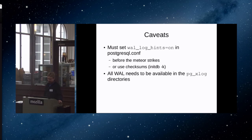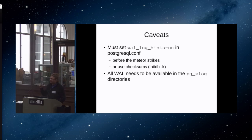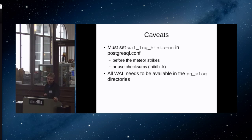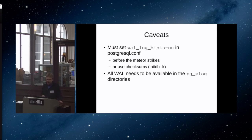Some caveats: for pg_rewind to work, you have to set an option in the config file called wal_log_hints. In Postgres there are hint bits on every table row — little flags indicating whether a transaction committed or aborted — so we don't have to consult the commit log every time we scan a table. Setting those hint bits is not normally WAL-logged, so for pg_rewind to work you need to set this option. It causes a little more transaction log to be generated, but it's not bad. If you've already enabled checksums when you created your cluster, those also generate the extra WAL records, so you don't need to set that option.